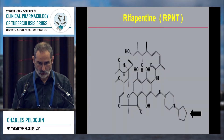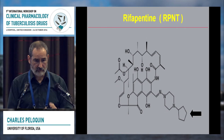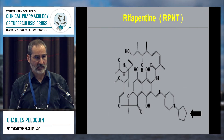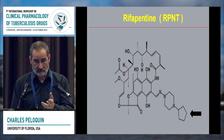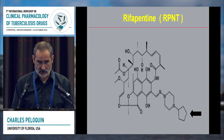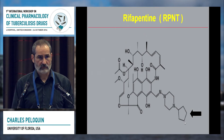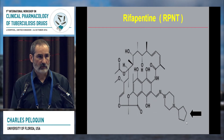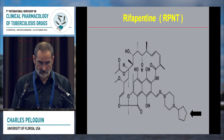Structurally, it's got this big cyclopentyl ring where the methyl group was on rifampin. The business end of the molecule — what people might call the warhead — is identical between rifampin and rifapentine. It's just this side chain. When you put a big lipophilic side chain on a molecule, you change its characteristics. In this case, it makes it hydrophobic, so when it's in the plasma, it sticks to things like albumin.